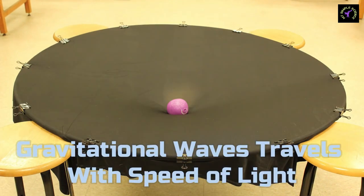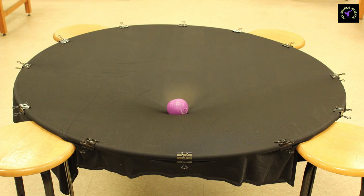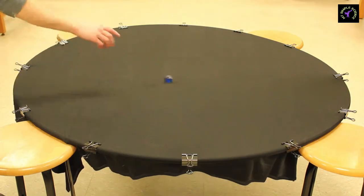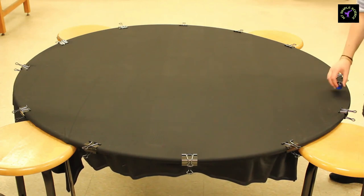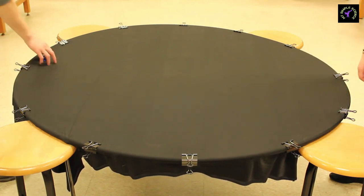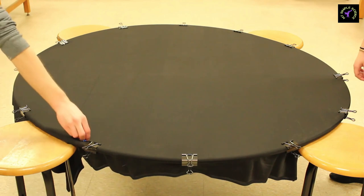For understanding this, consider if the Sun were to disappear from its place right now. Because of this, Earth would leave the orbit of the Sun and start to travel straight in space, not immediately but after 500 seconds.